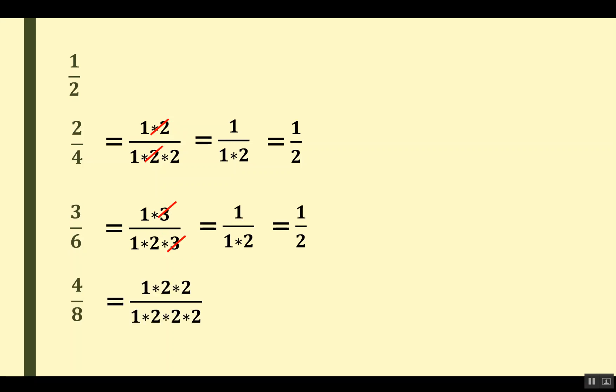Same goes for 4 out of 8. If we do the prime factorization, the prime factors will be 1 × 2 × 2 × 2 and 1 × 2 × 2. In this way, we have found that the common factors are two sets of 2. So we will cut them, and after cutting, we will find that we have 1 out of 2 as the simplified fraction of 4 out of 8.